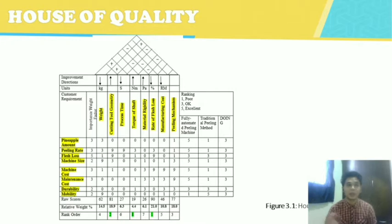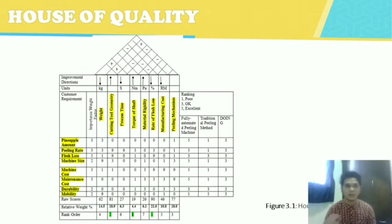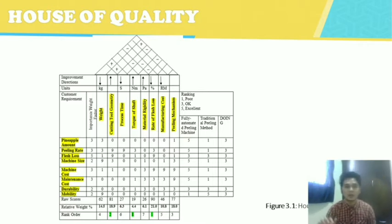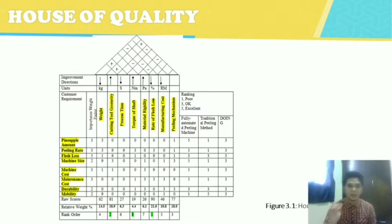After conducting the survey, we came up with a house of quality. We have customer requirements: pineapple amount, peeling rate, flesh loss, machine size, machine cost, maintenance cost, durability, and mobility. We also have general requirements: weight, cutting tool geometry, process time, top of shelf, material rigidity, rate of flesh loss, and manufacturing cost. In conclusion, rate of flesh loss has the highest relative weight compared to others, followed by cutting tool geometry, and lastly top of shelf.